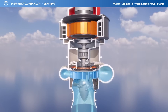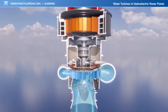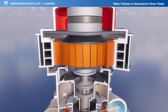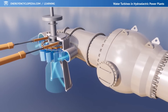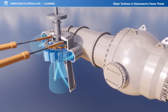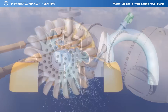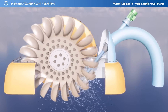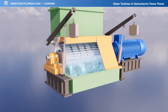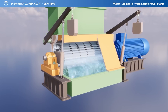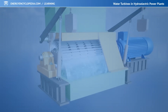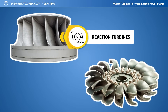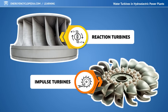By definition, a water turbine is a rotary mechanism that transforms the potential and kinetic energy of water into mechanical work. In all types of water turbines, flowing water is aimed at the blades of a rotating wheel called a runner, creating the force that moves the entire turbine rotor. Depending on the energy transfer method and pressure in the runner, water turbines are classified into two basic groups: reaction and impulse.